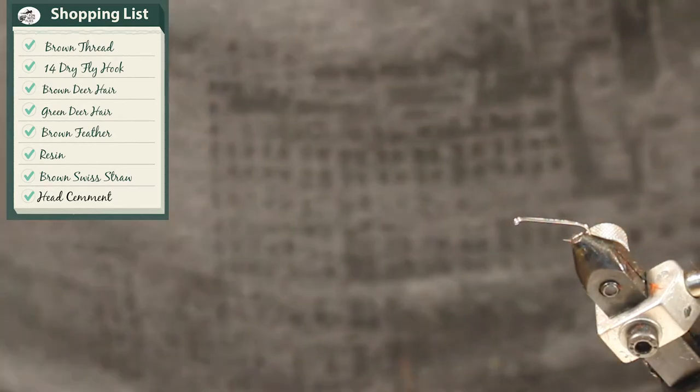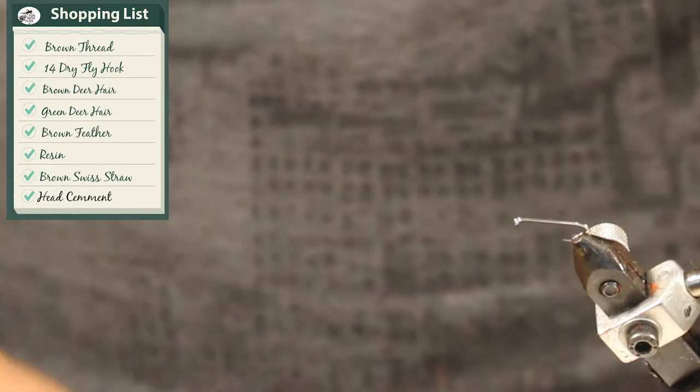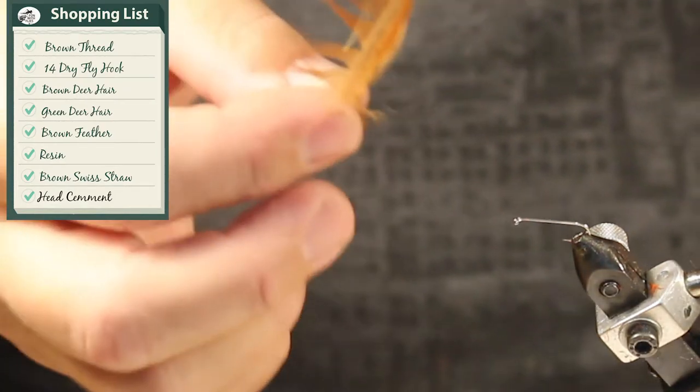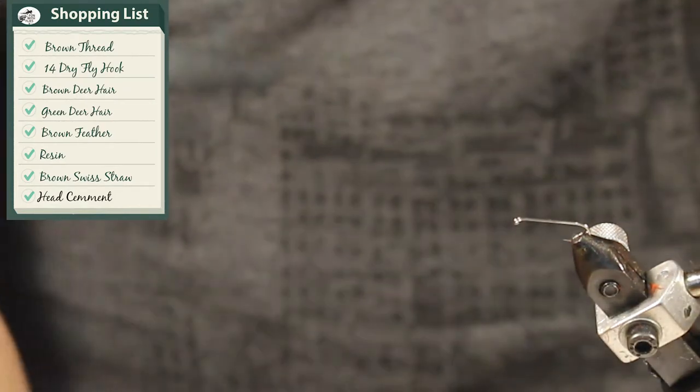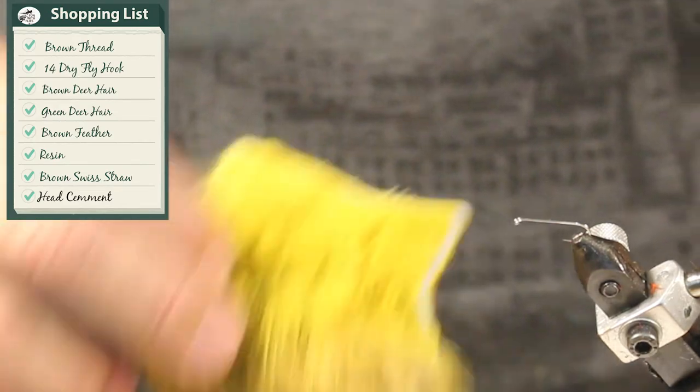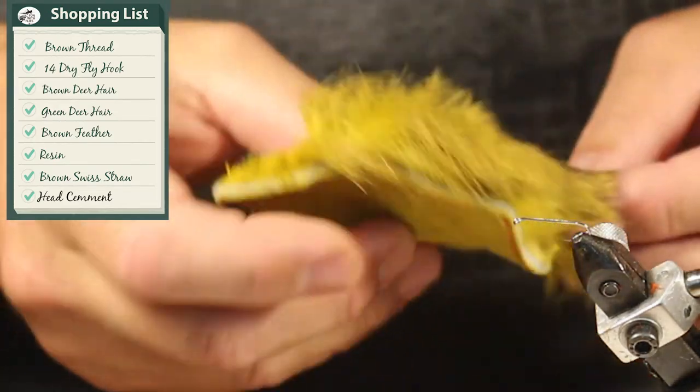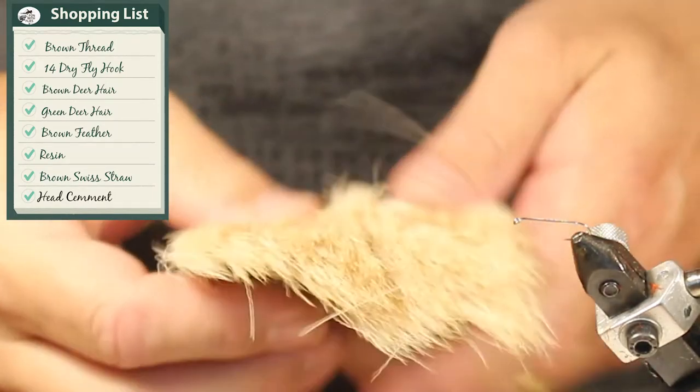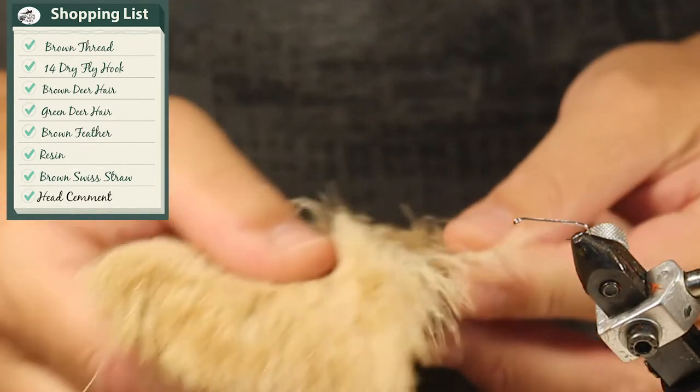I've got some brown thread. For the wing, I'm going to be using some brown Swiss straw and a brown hackle feather. For the body, I'm going to be using some dyed green deer hair. And for the head, I'm going to be using some light brown beige deer hair.